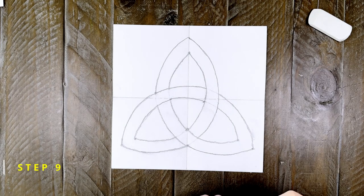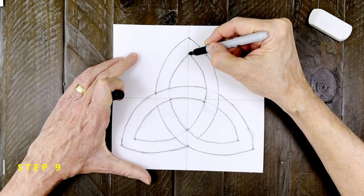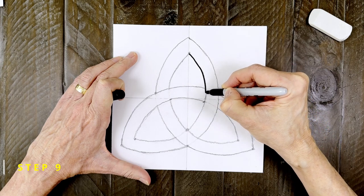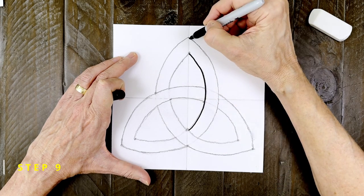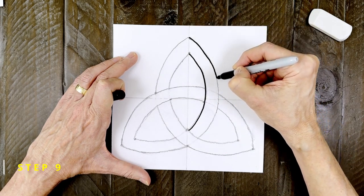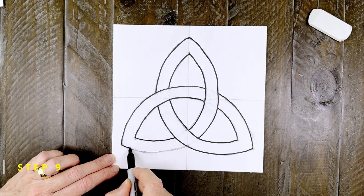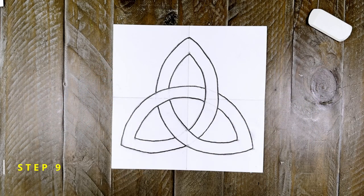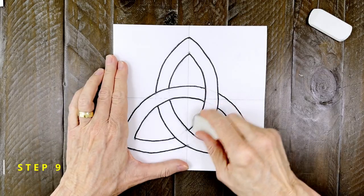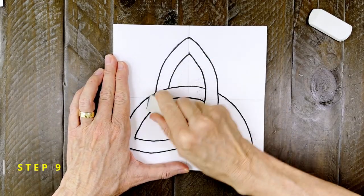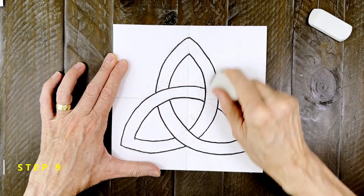Step number nine. When your knot is looking good, carefully trace all the lines with a good black marker. Work slowly because this is one drawing where neatness will really make it look its best. When you're done tracing, as always, take an eraser and get rid of any pencil lines that are still showing through.